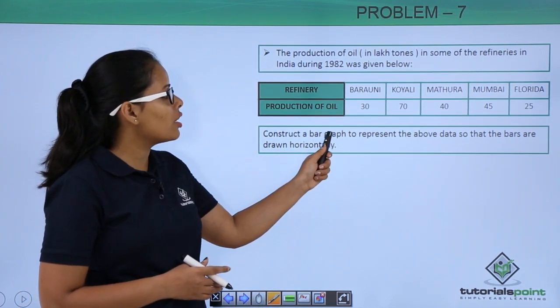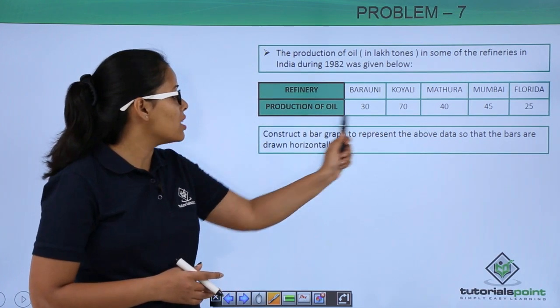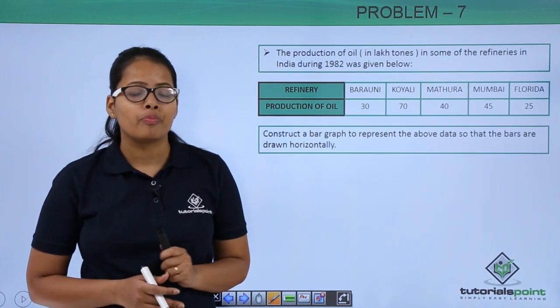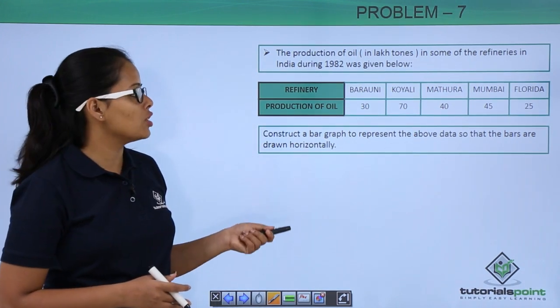Now you need to construct a bar graph to represent the above data so that bars are drawn horizontally. You must be wondering what it means by the bars are drawn horizontally. Let's see for yourself.